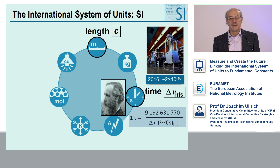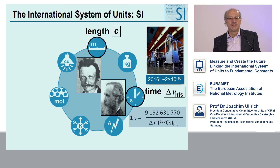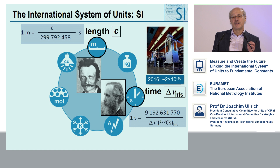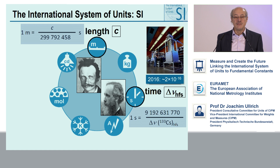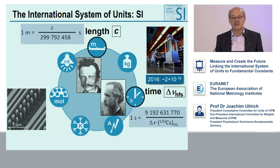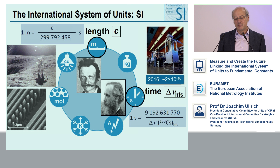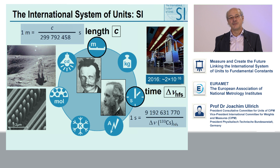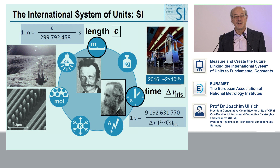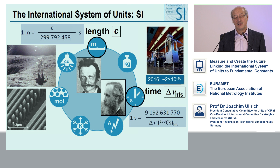We applied this concept as well for the meter, by fixing the numerical value of another constant of nature — the speed of light — to be exactly 299,792,458 meters per second. This was suggested early on in 1900 by Max Planck. Nowadays, we can measure very small distances from micrometers to the nanometer and even picometer regime, up to very large distances like in the lunar ranging project, where we measure the distance to the moon with an uncertainty of a few centimeters. This uncertainty is only limited by our technical ability, not by any definition.